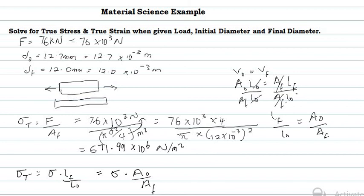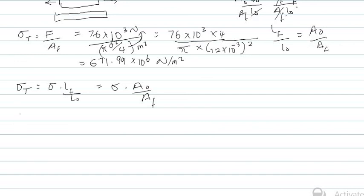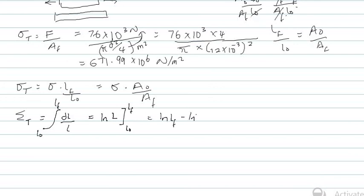Next, we calculate our true strain, represented by ε. True strain is defined as the integral of dL/L from original to final length. When integrated, this gives ln(L) evaluated from L₀ to L_F, which equals ln(L_F) − ln(L₀), or ln(L_F/L₀). Using the same constant-volume principle, this can be expressed as ln(A₀/A_F).